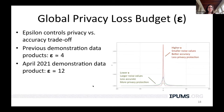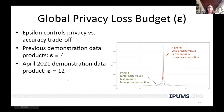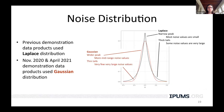One of the biggest decisions the Bureau has been wrestling with is where to set the global privacy loss budget — the parameter epsilon. Higher epsilon values narrow the distribution, giving smaller noise values, which means better accuracy but less privacy protection. Conversely, lower epsilon values give larger noise values, meaning less accuracy and more privacy protection. For previous demonstration data products, epsilon was about four. For the most recent demonstration data product, epsilon has been set at about 12, and the Bureau reports this value of 12 is more consistent with what they will ultimately use for the published data.